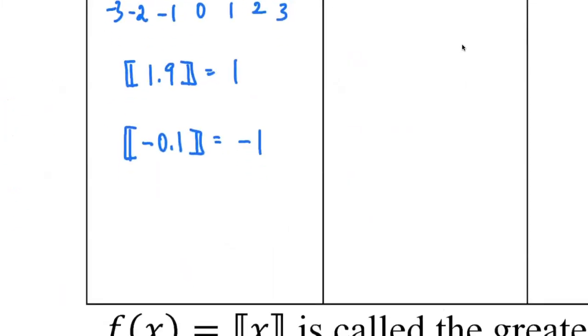Let's look at the graph. We saw the graph earlier on Desmos, and we'll do the same graph again. This time I want to make sure you understand how the graph reflects the step function values. One more example: what if I have an integer? If your foot is already three steps high and you plant your foot, you plant it on the third step — not going back to the previous. It would be very strange to go back to the second step. This is your third step.